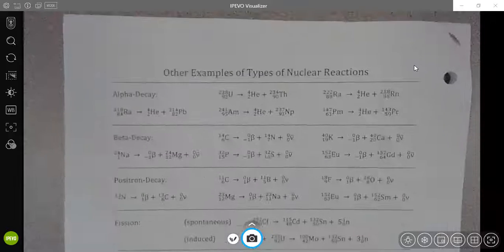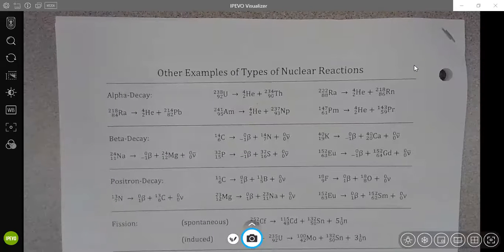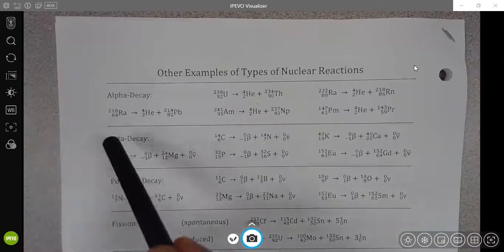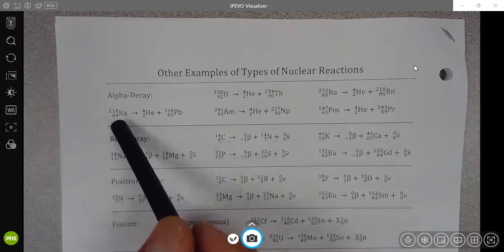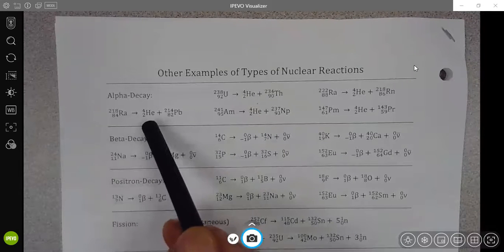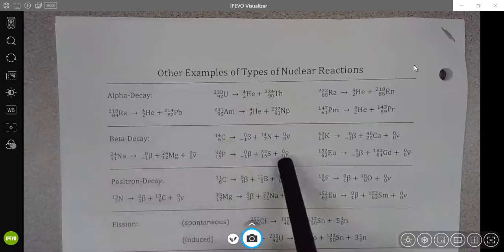I want to focus down first on alpha decay. Notice that with alpha decay, just like all of these other decays, we start out with just one reactant and that one reactant is turning into two products or more.